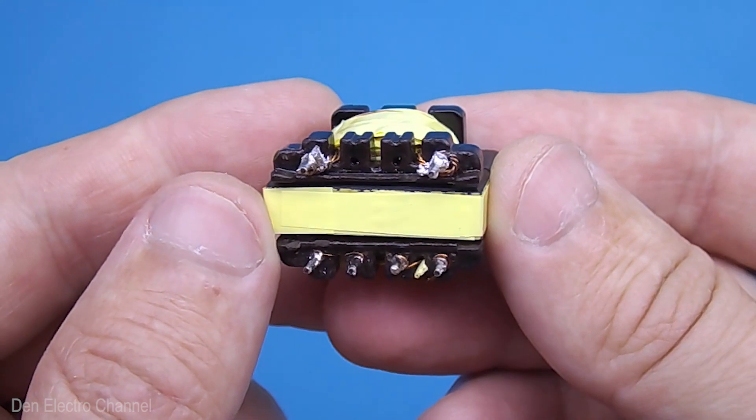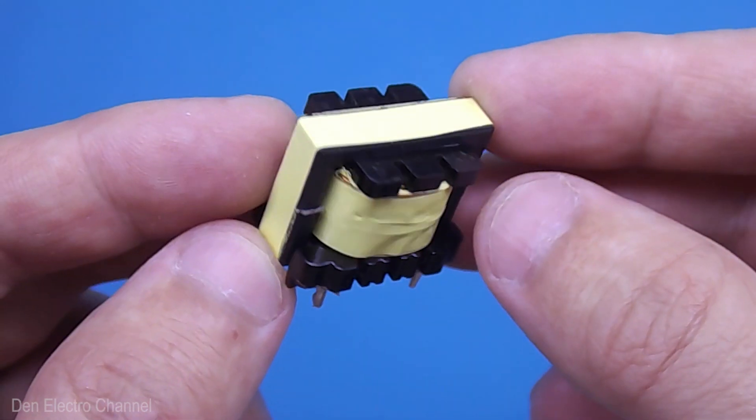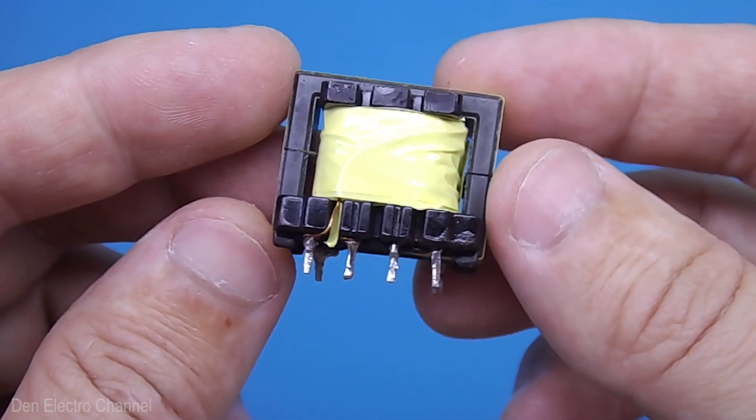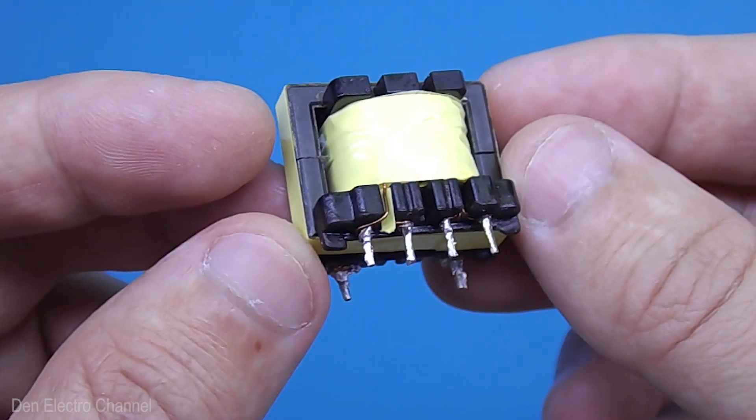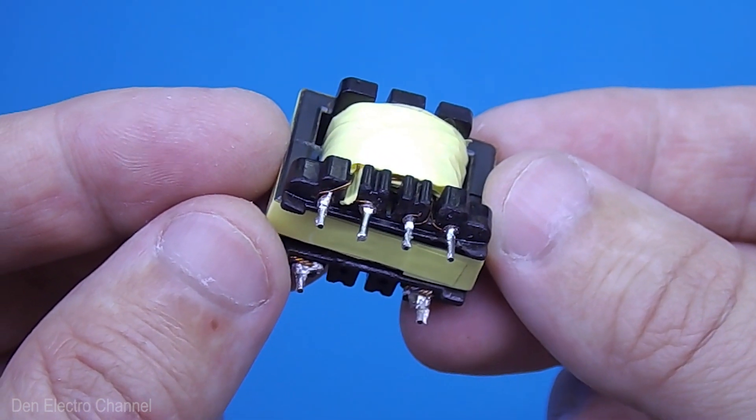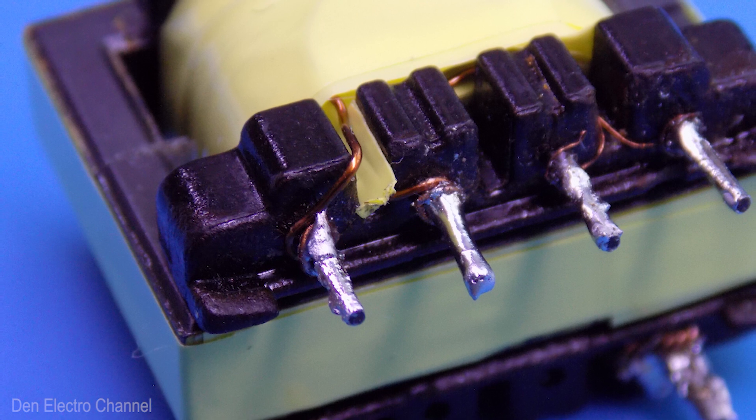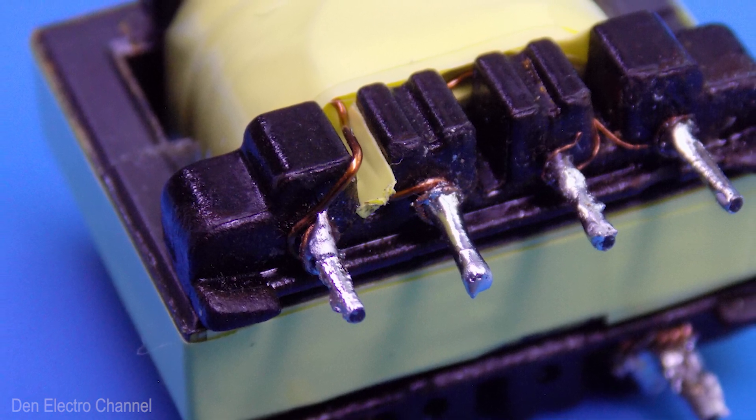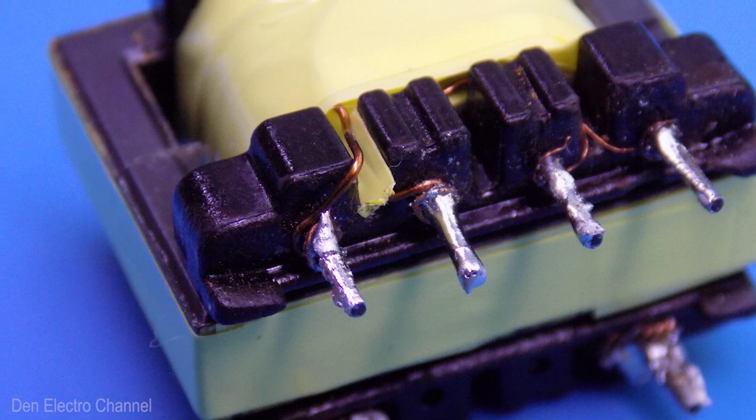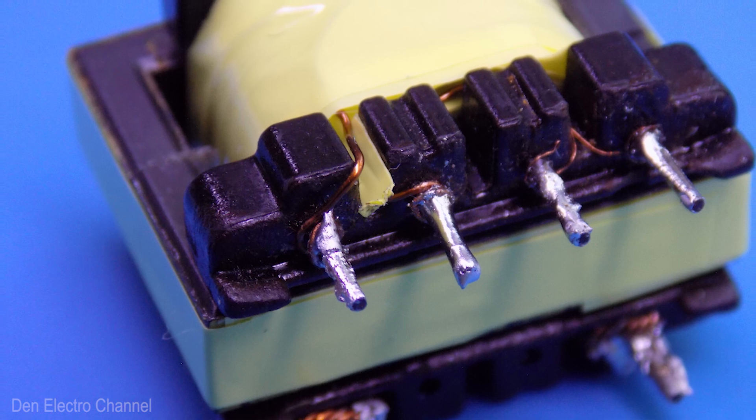When everything is ready, you get such a nice transformer. All wire terminals must be cleaned of varnish, tinned and soldered to the legs. If desired, the halves of the core can be glued together. In the place where the ends of the primary winding come in and out, just in case, put a piece of electrical tape. At this point, the input and output leads of the primary winding are very close to each other, and therefore there is a possibility that the insulation of the wire may be broken. After all, between these terminals, there is a rectified mains voltage of more than 300 volts.